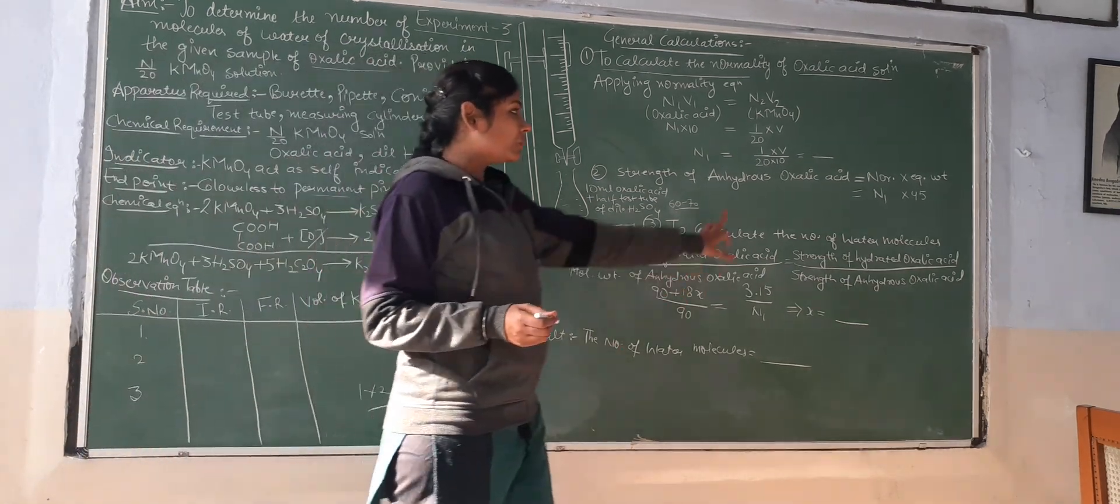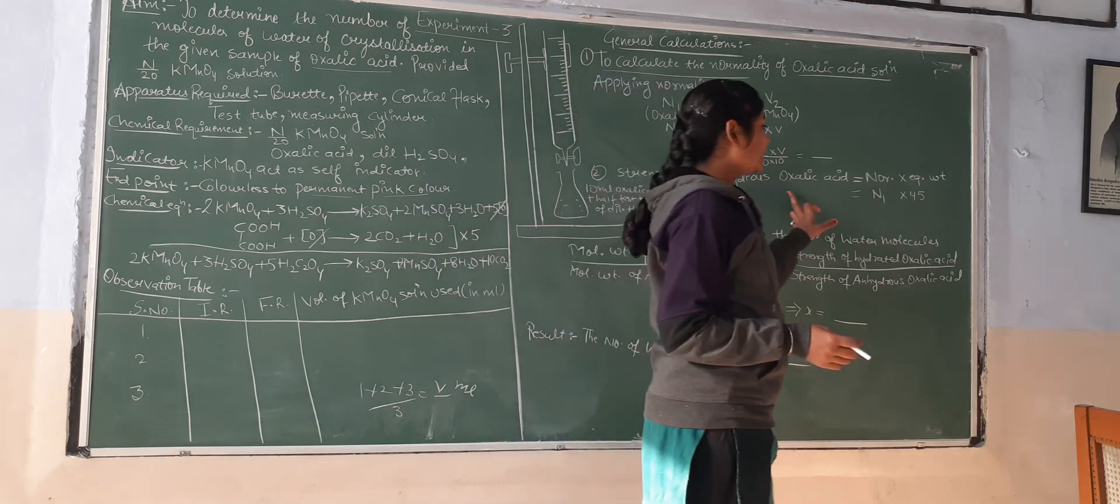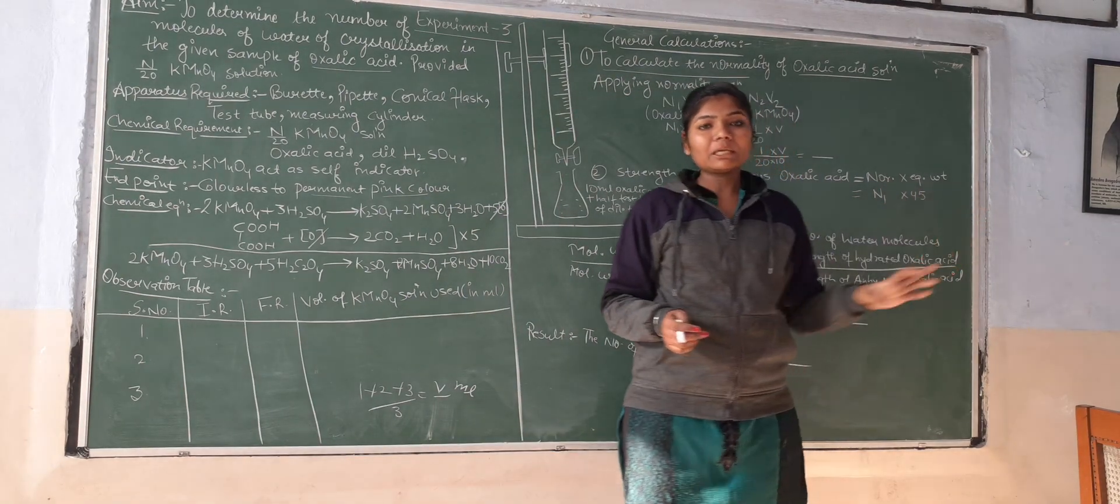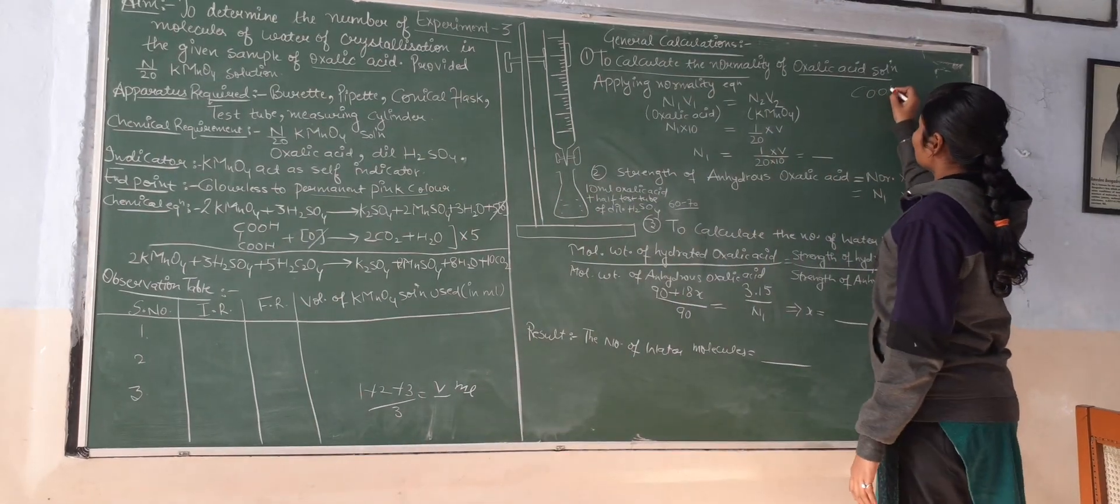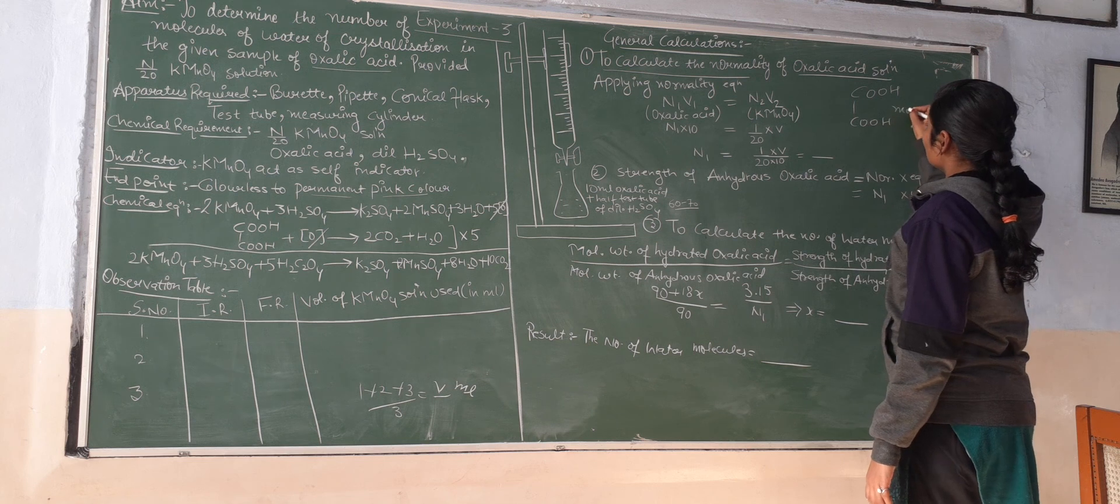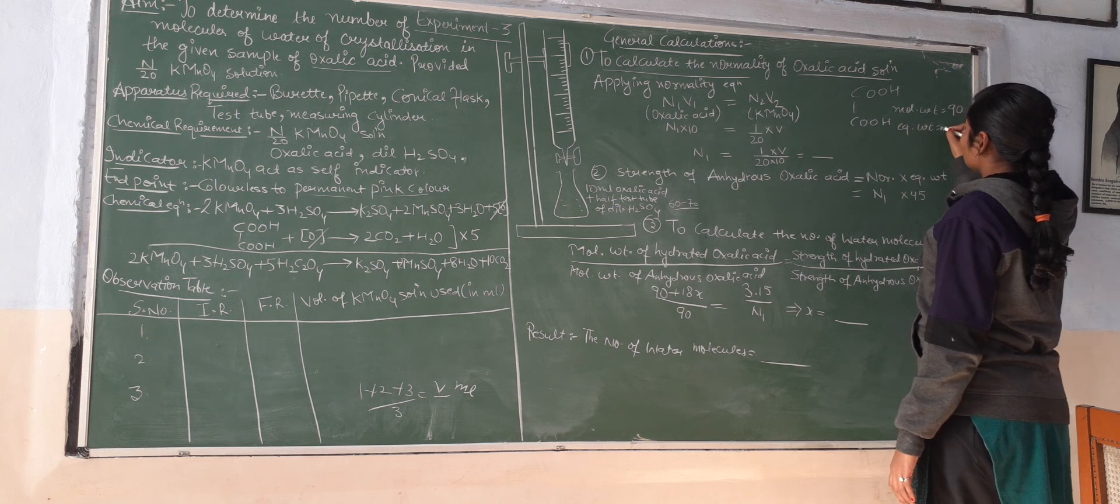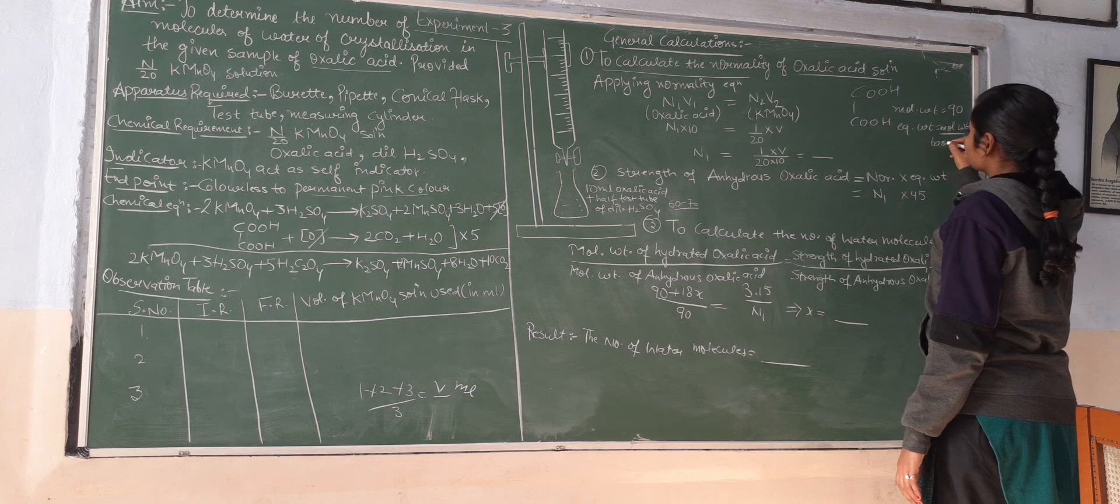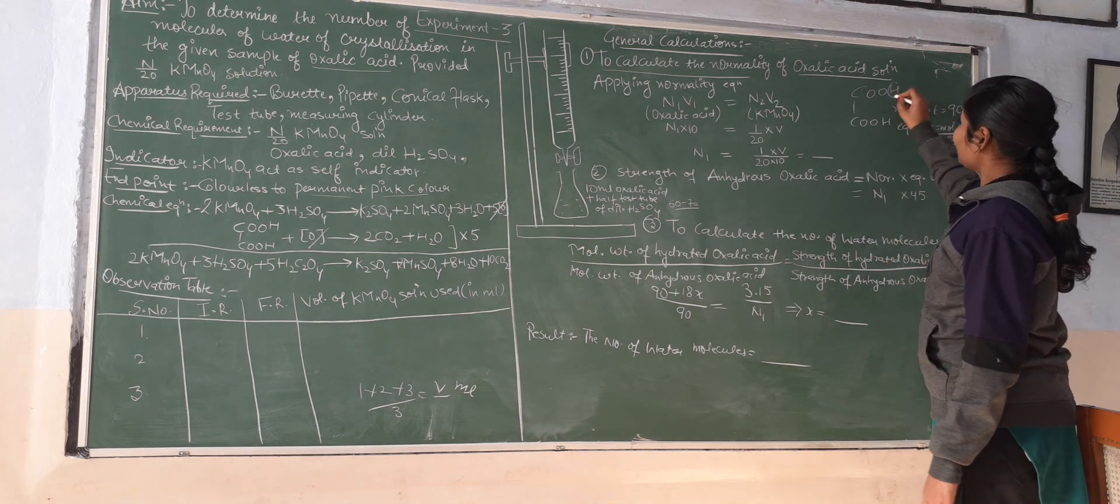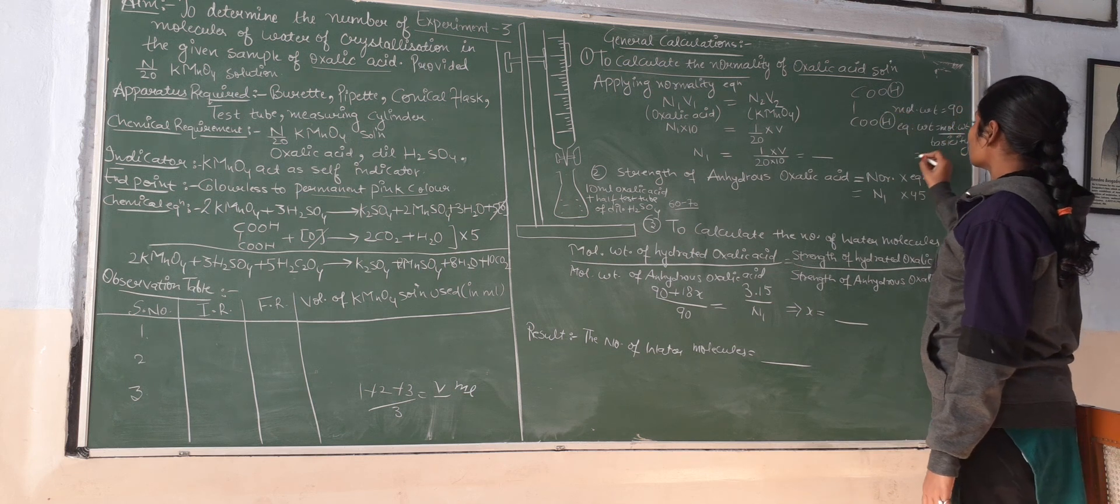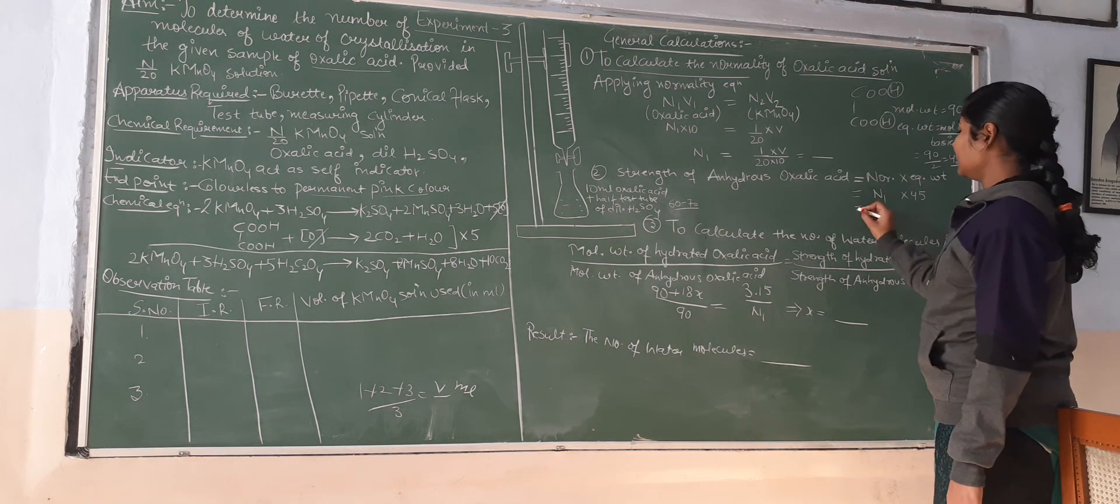The second step is to calculate the strength of oxalic acid. Strength equals normality times equivalent weight. The molecular formula is COOH-COOH with molecular weight 90. Equivalent weight equals molecular weight divided by basicity. The basicity is 2, so 90 divided by 2 equals 45 for the equivalent weight.